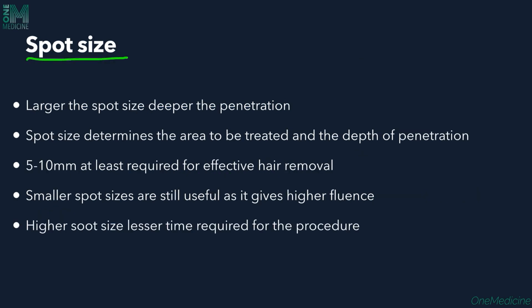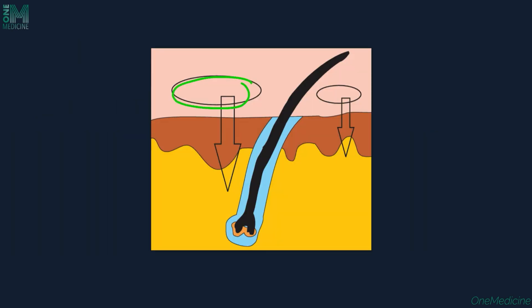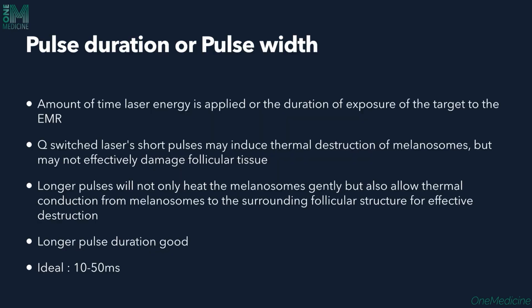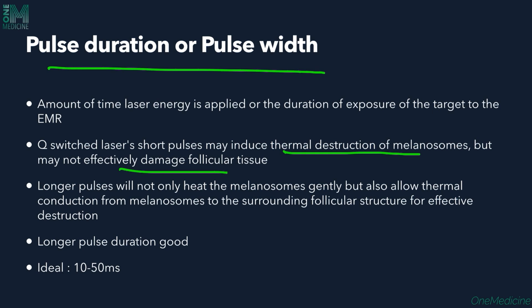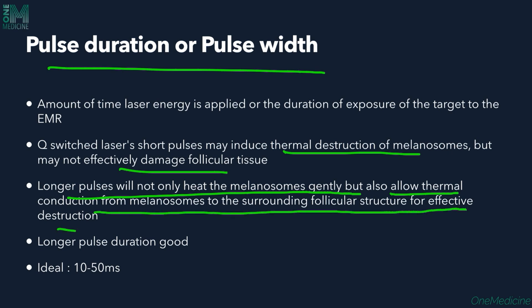Spot size of the laser is also important — larger the spot size, greater will be the penetration, which will effectively reach and destroy the hair follicle. Pulse duration or pulse width is the amount of time through which the laser energy is applied, or the duration of exposure of the target tissue to the laser light. Q-switch lasers have short pulses that may induce thermal destruction of melanosomes but may not effectively damage follicular tissue. Longer pulses not only heat the melanosome gently but also allow thermal conduction from melanosome to the surrounding follicular structure, causing effective destruction.